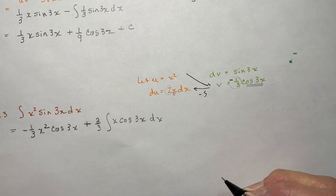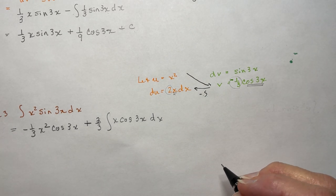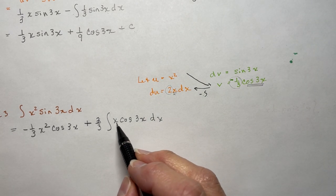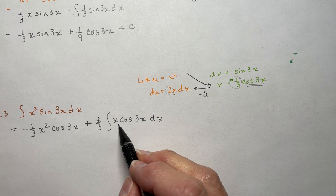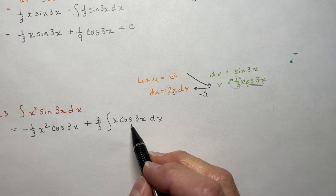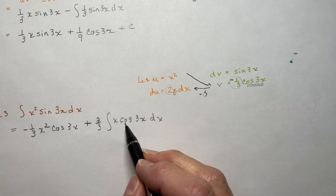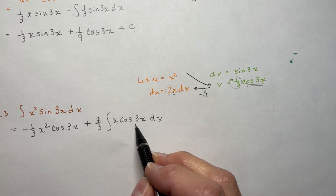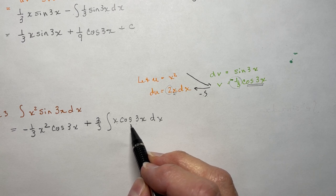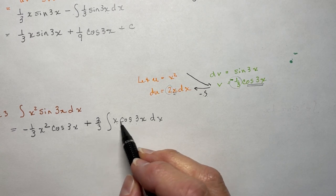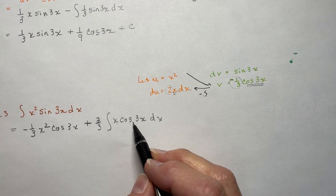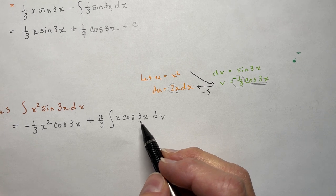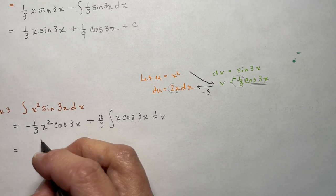So now I'm all set to take the integral. But look — I've got x·cos(3x), so that's another integration by parts. So it's like I did the product rule, I reversed it, and now I still have another product. Sad story.